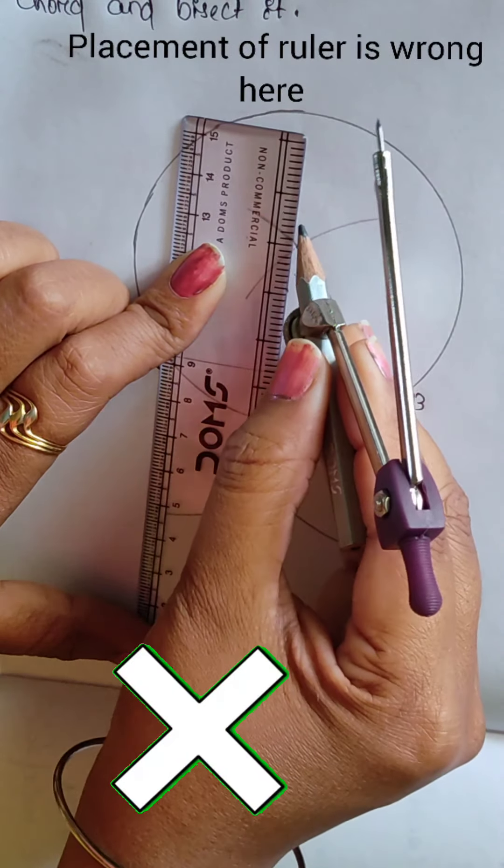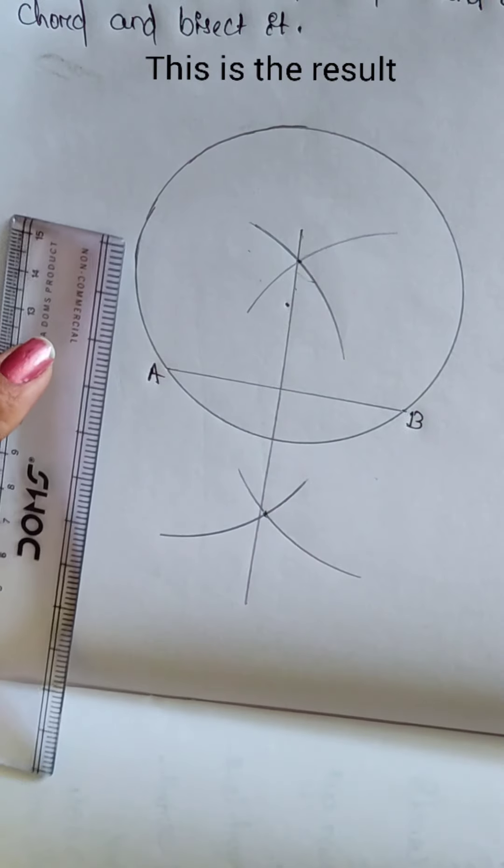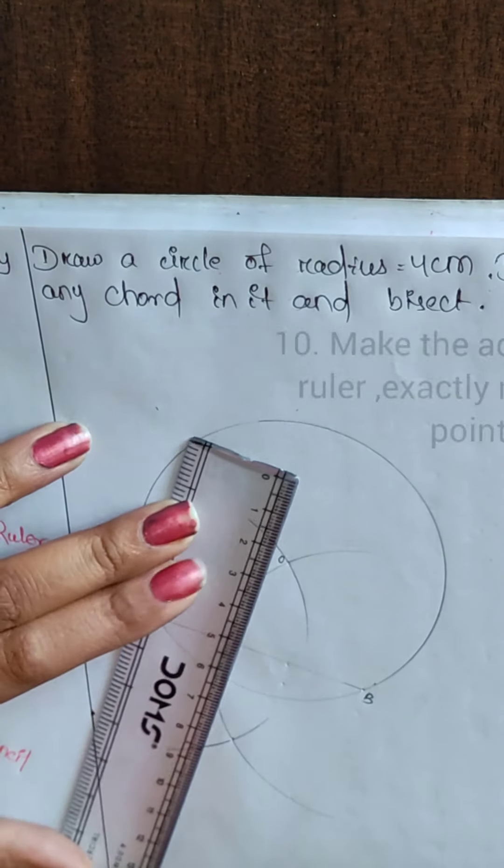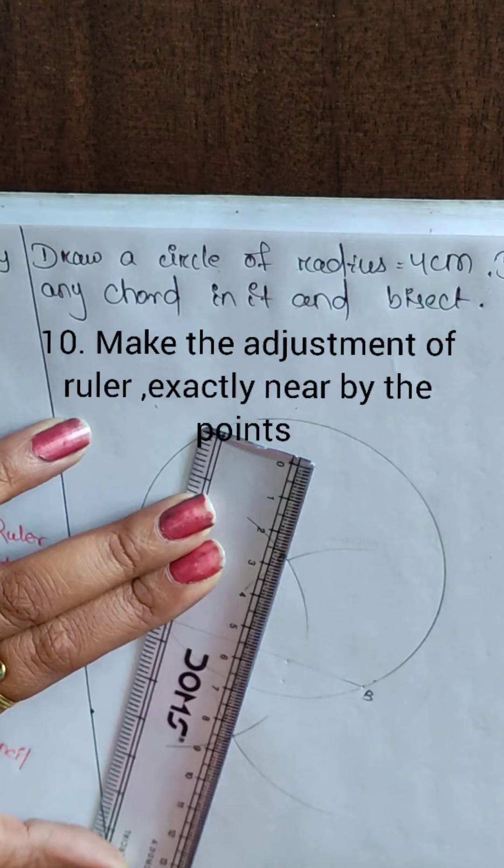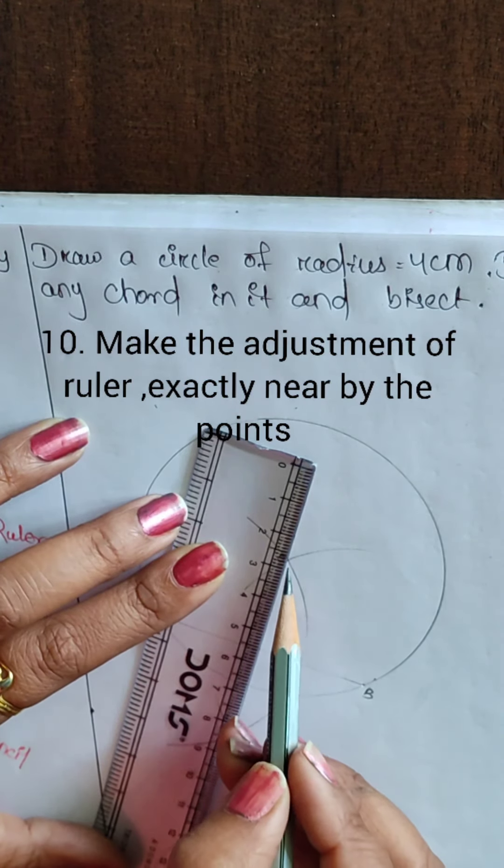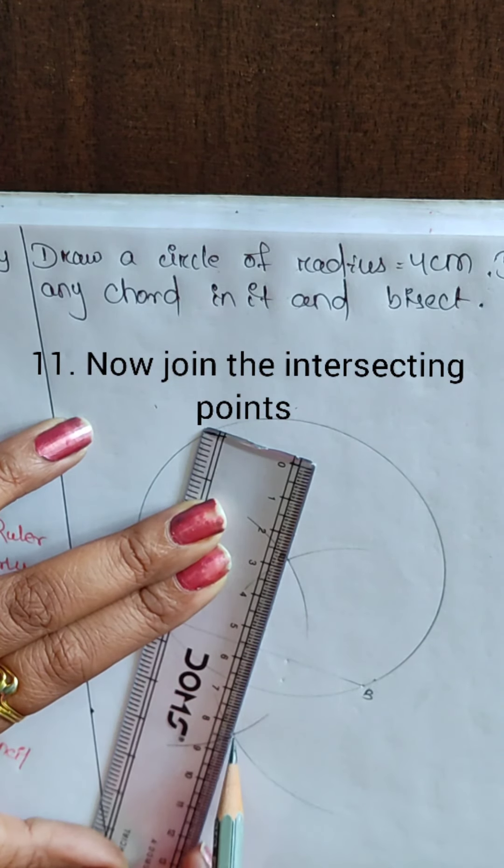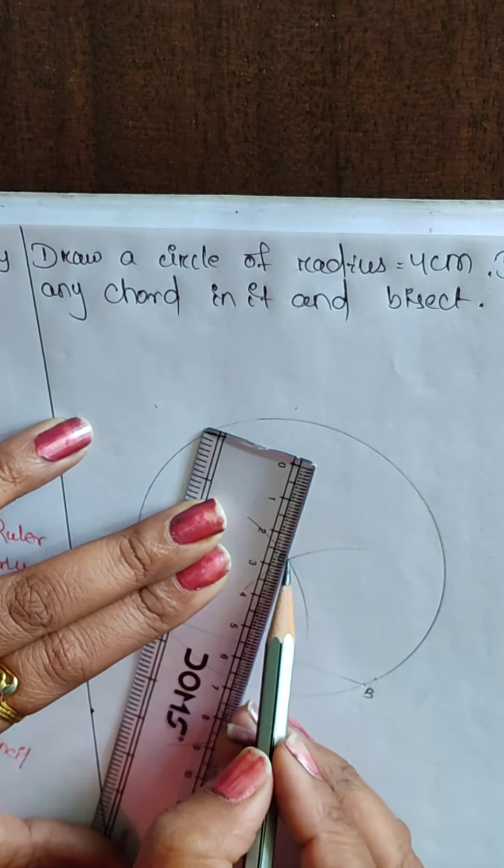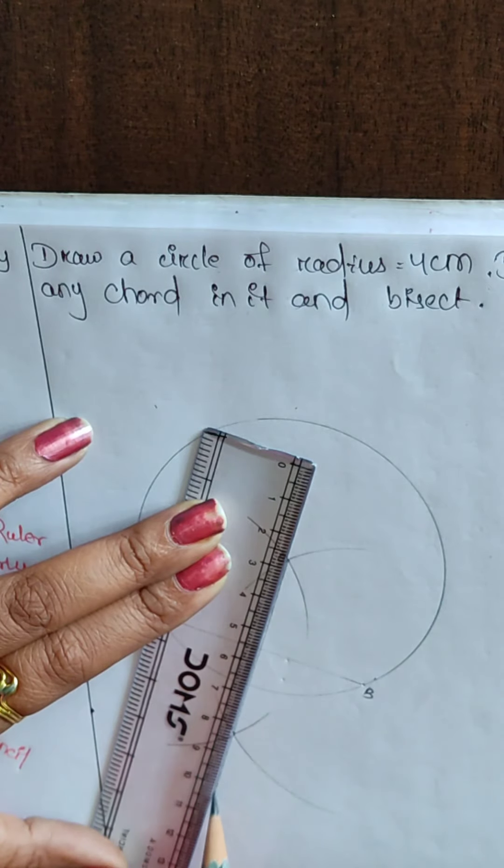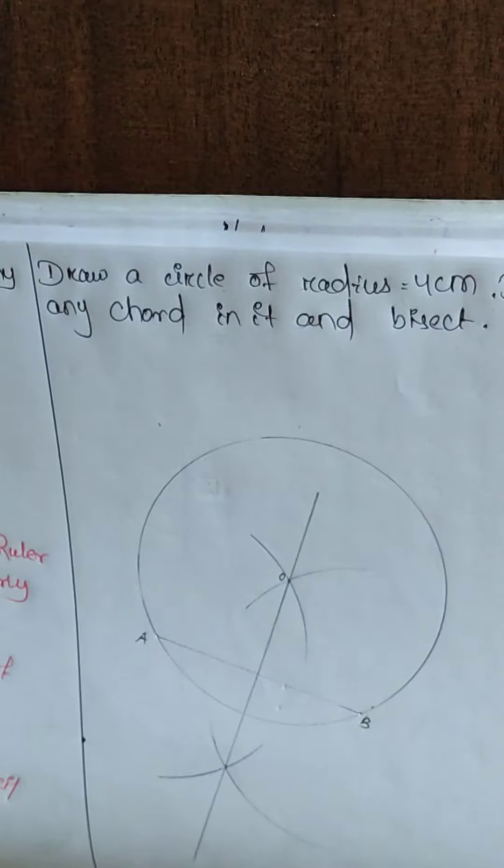You have done wrong also. Placement of the ruler is absolutely wrong. And here, this is the result. Make the adjustment of the ruler exactly nearby the points. Not above it. Not away from it. Now join the intersecting points. Use the other second pencil. Yes. Done.